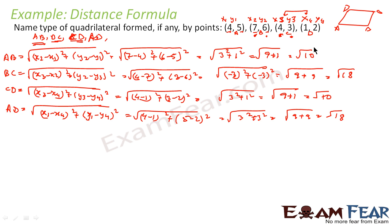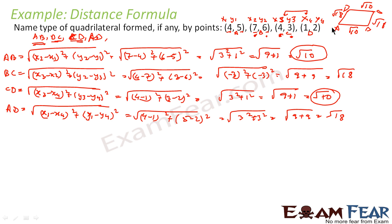So if you observe, the opposite sides are equal: AB equals root 10, CD equals root 10, and BC equals root 18, DA equals root 18. Note that if AB equals BC and DA equals CD, that does not make it a rectangle or parallelogram — only if opposite sides are equal can we conclude things. Here the opposite sides are equal, so we have two possibilities: it can be a parallelogram or a rectangle. If the diagonals are equal we say it is a rectangle; if the diagonals are not equal we say it is a parallelogram.